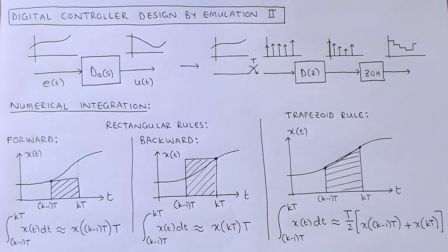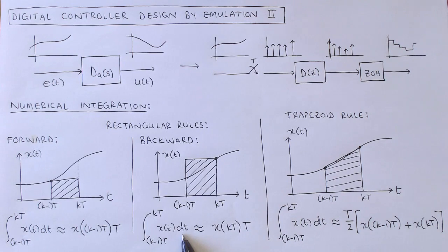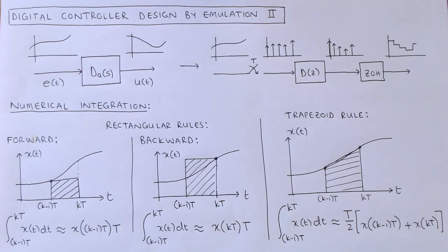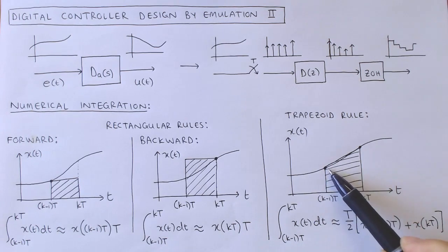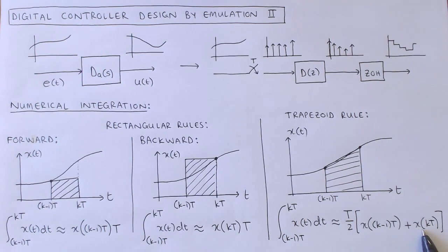For the backward rectangular rule, the function x over the interval is approximated by the value of function x at the end of the interval times the length of the interval. The trapezoid rule is slightly more sophisticated: the function x over the interval is approximated by the straight line between x at the start of the interval and x at the end of the interval. The integral is then approximated as the length of the interval divided by 2, times x at the start of the interval plus x at the end of the interval.